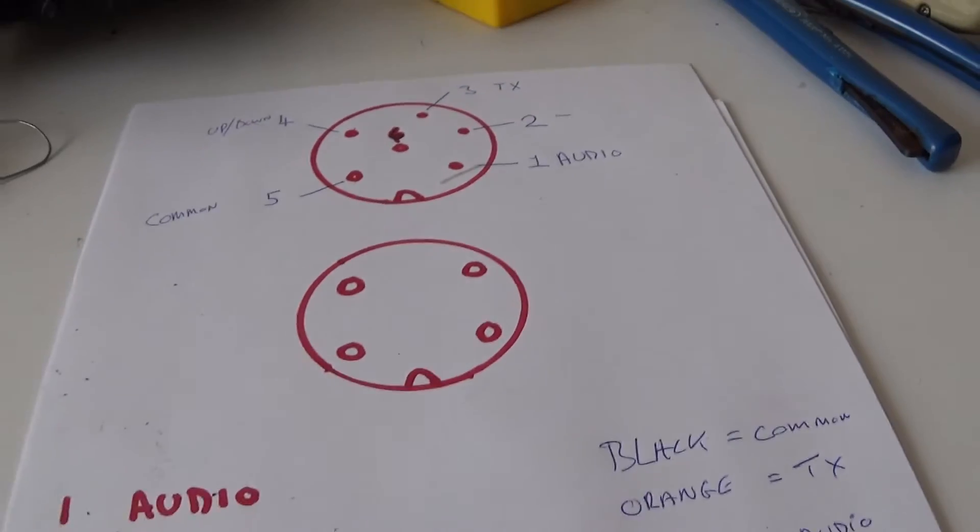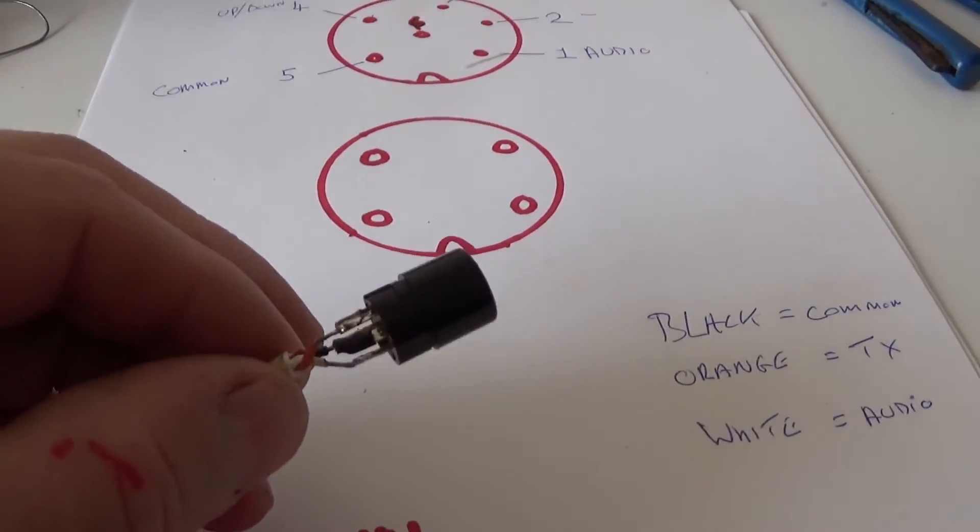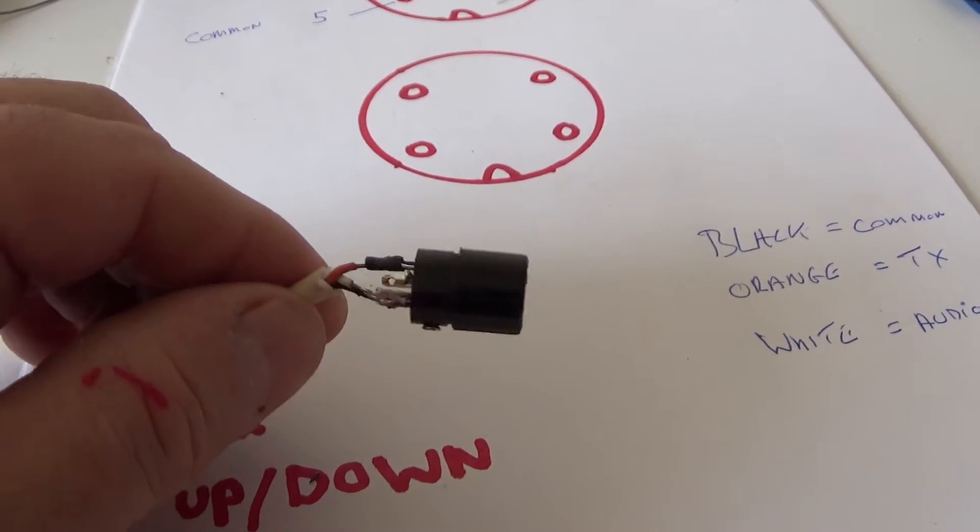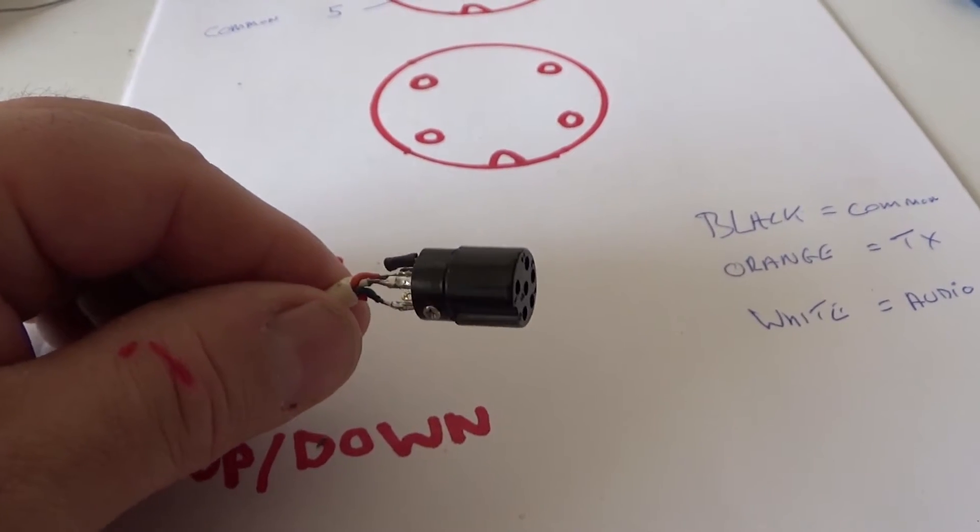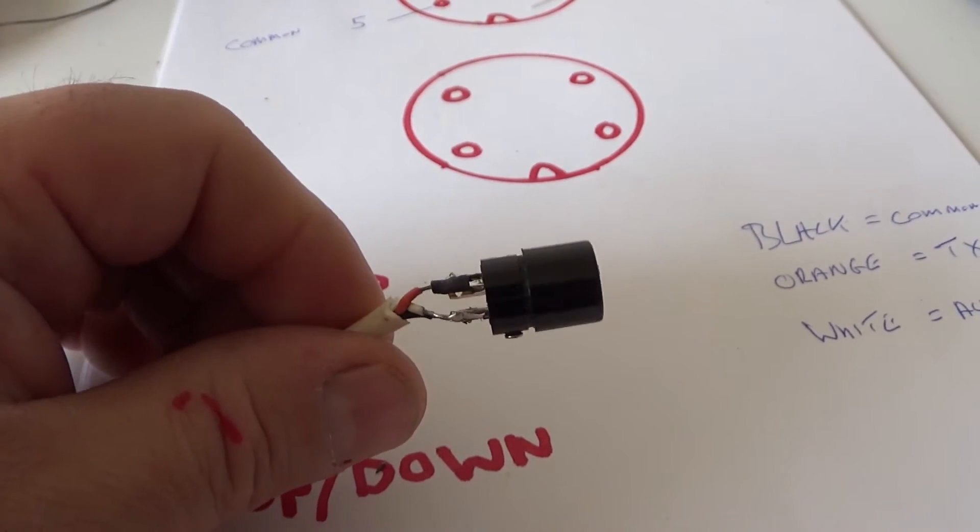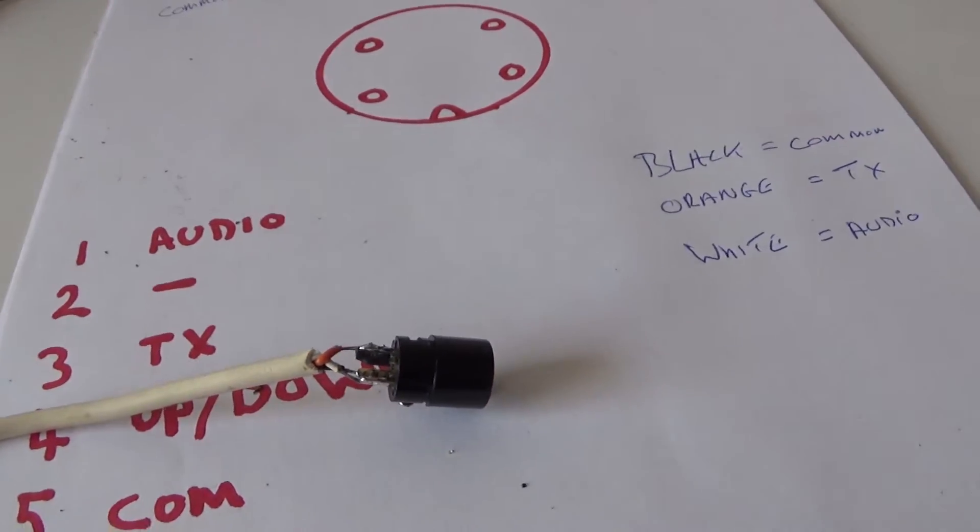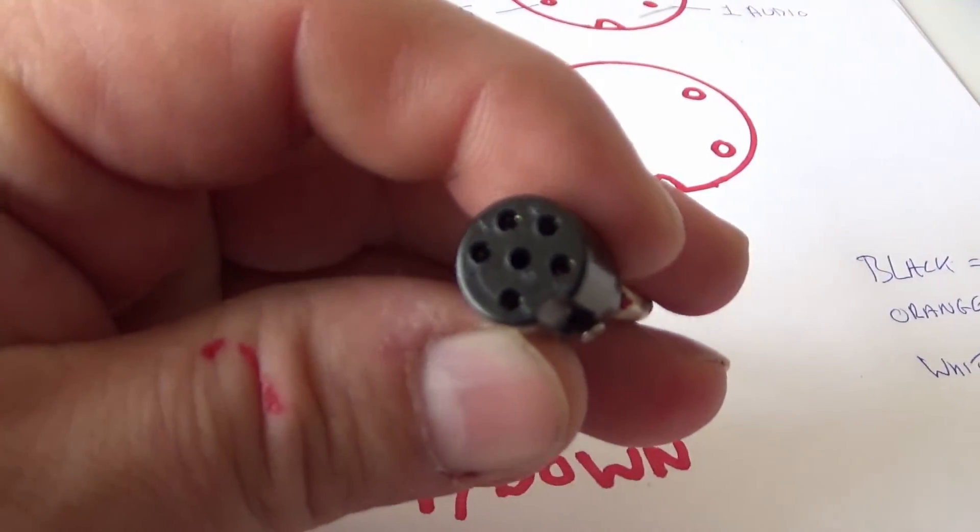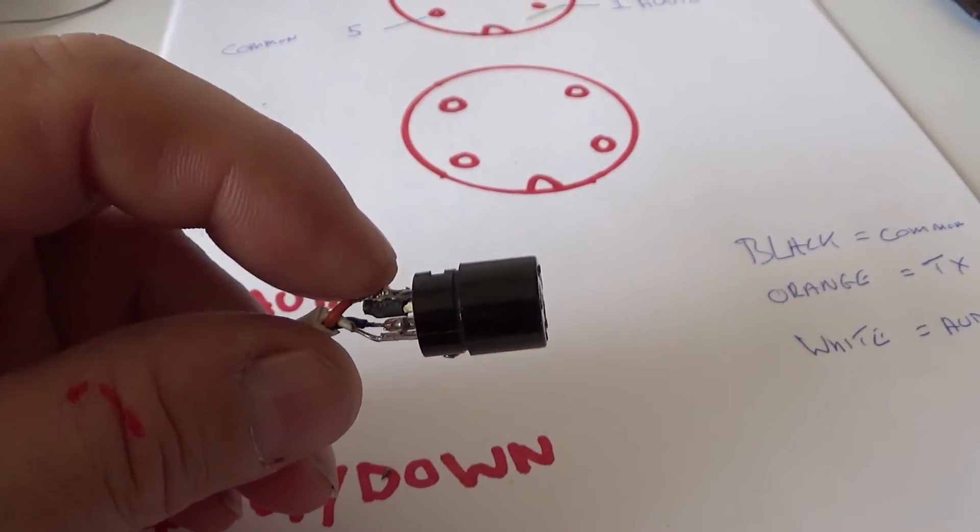Let me just recap with you in case this is still unclear. First job is to find your common. Normally, particularly on the older mics, the common is the wire with no rubber around it. So straight away you've got that. Put your meter on diode test, continuity, or whatever, so when you get a circuit or touch the probes together you get the signal.